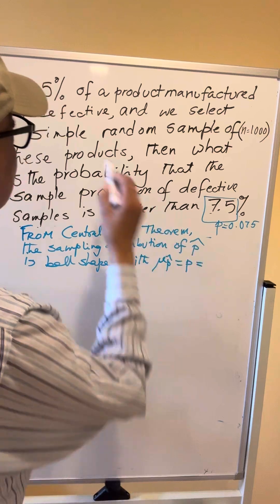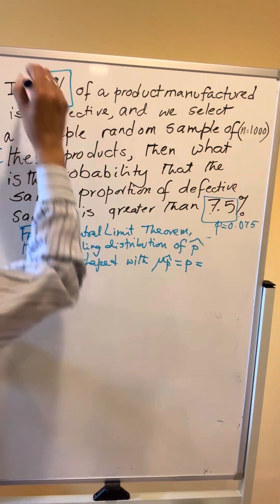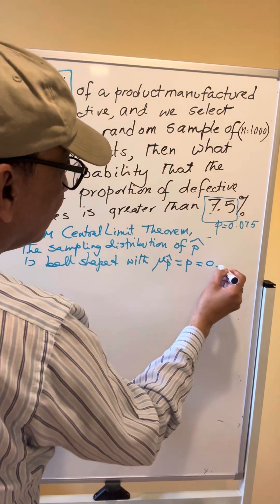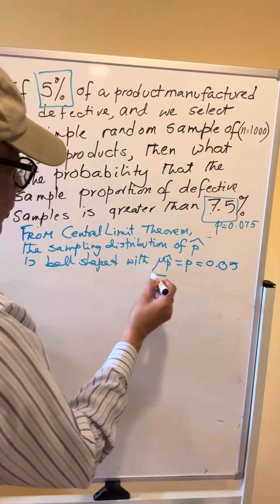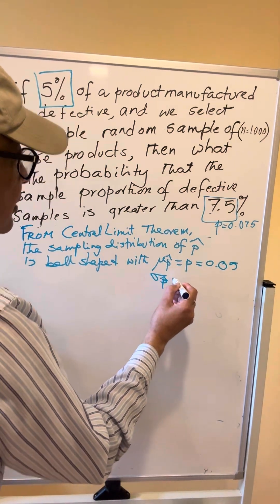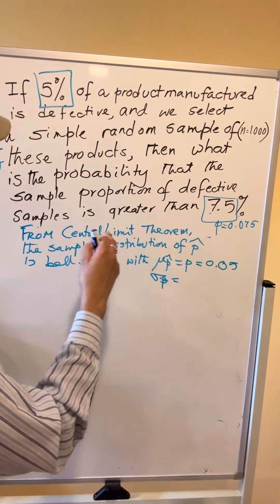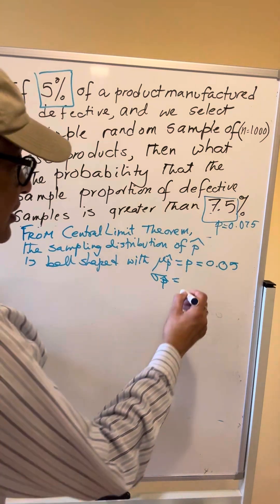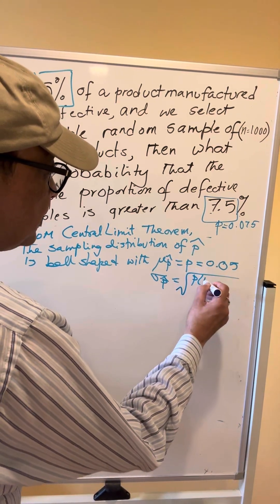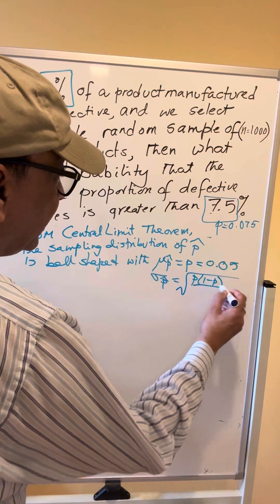And sigma P-hat, that is the standard deviation of the sampling distribution of P-hat, is square root of P times 1 minus P over N.